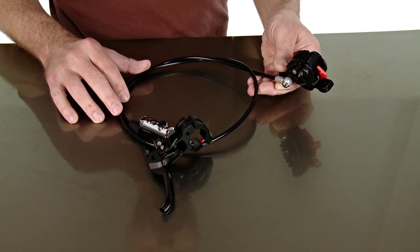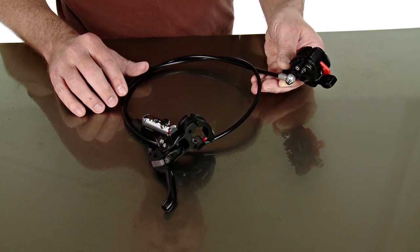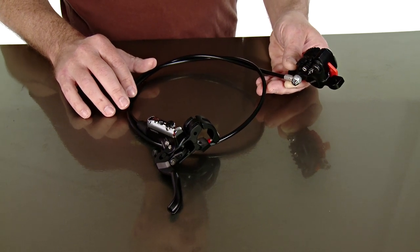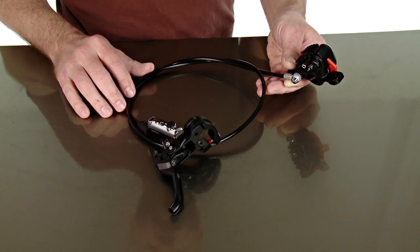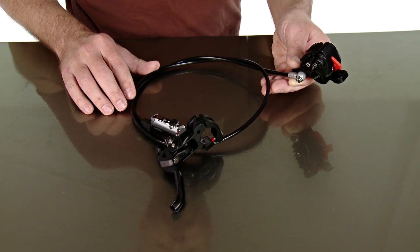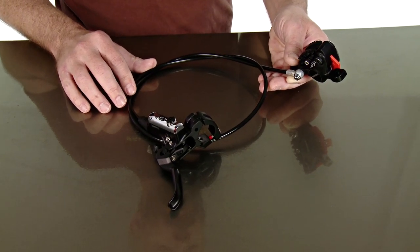The set includes the caliper, the hose and the lever. The hose on the front brake is a thousand millimeters and on the rear brake is 1700 millimeters. It comes set up for post mount and 160 millimeter rotors which are not included. Other rotor sizes and caliper adapters are sold separately.